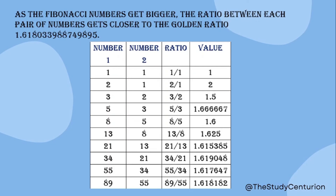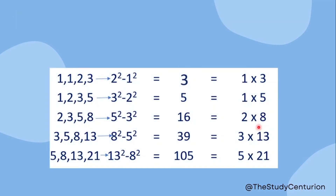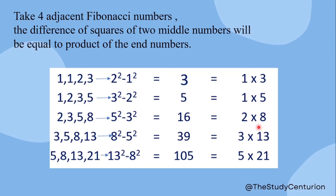The value keeps approaching 1.618. We have 4 numbers. In these 4 numbers, we have squares in the difference — 5% of the product is equal. This is also a pattern of Fibonacci numbers.